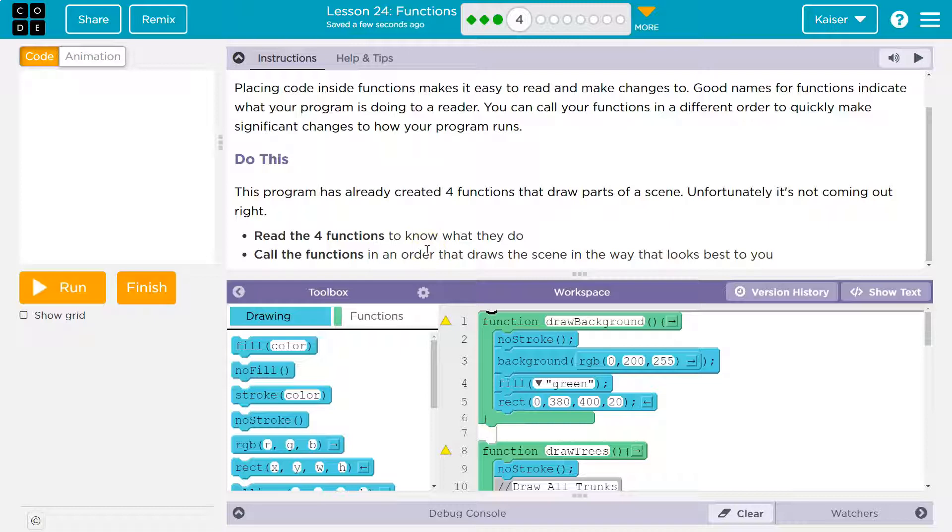Read the four functions to know what they do. Call the functions. Keep in mind, calling a function is just saying its name. So we've created these functions, and like I've said before, I think of it as a box of code. We have this green box of code. Yes, the draw loop, by the way, is a function. We have this green box of code, and we place this code inside of it.